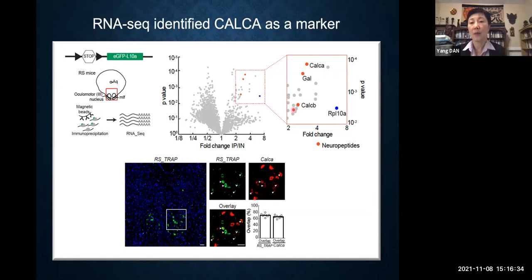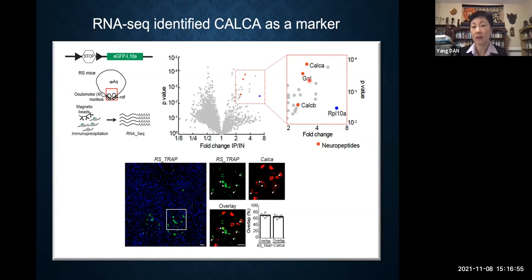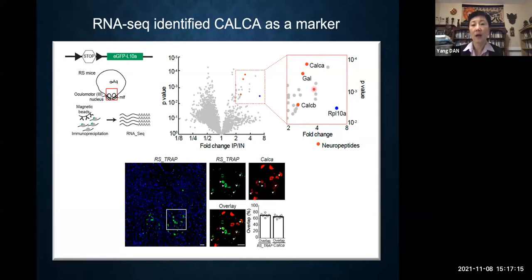Among the three neuropeptides enriched in this region, one called CALCA — calcitonin gene-related peptide alpha — showed a high overlap with the GFP labeling of the putative sleep neurons. So we decided to focus on the CALCA cells.